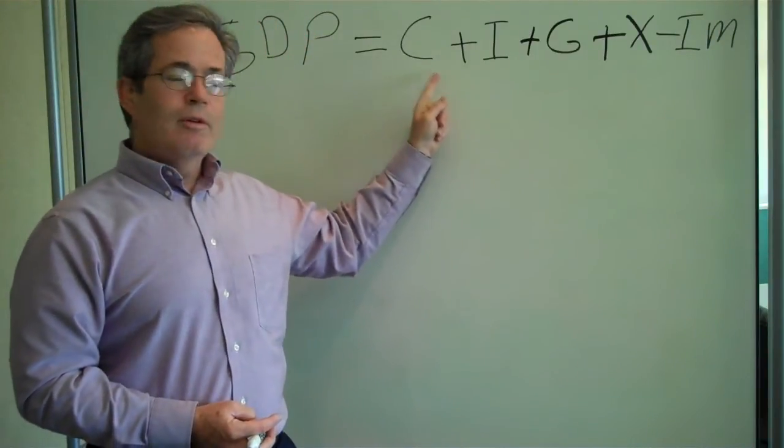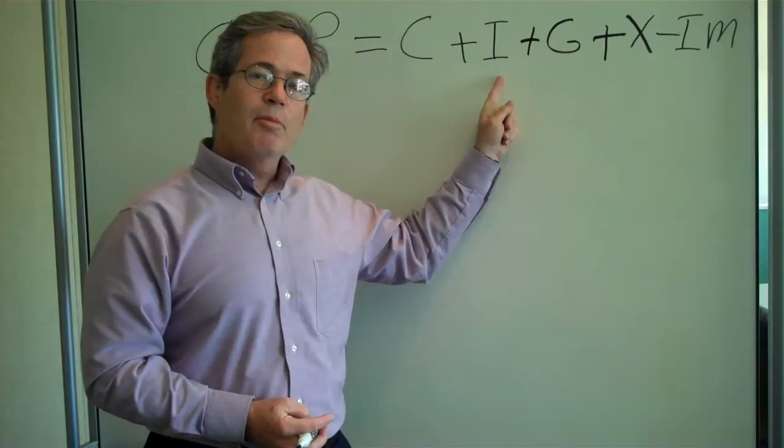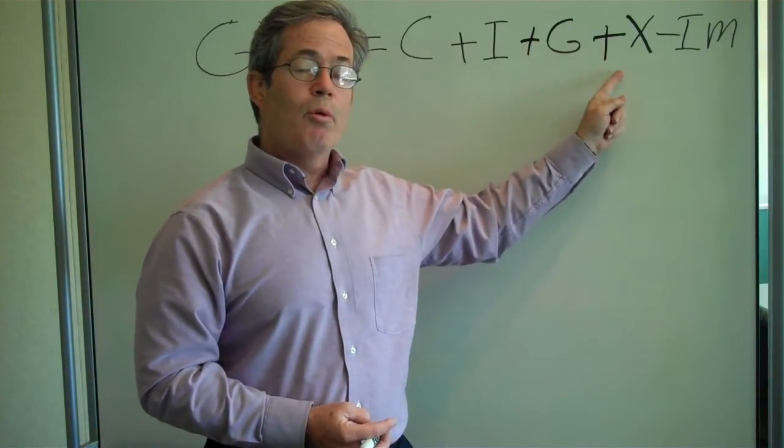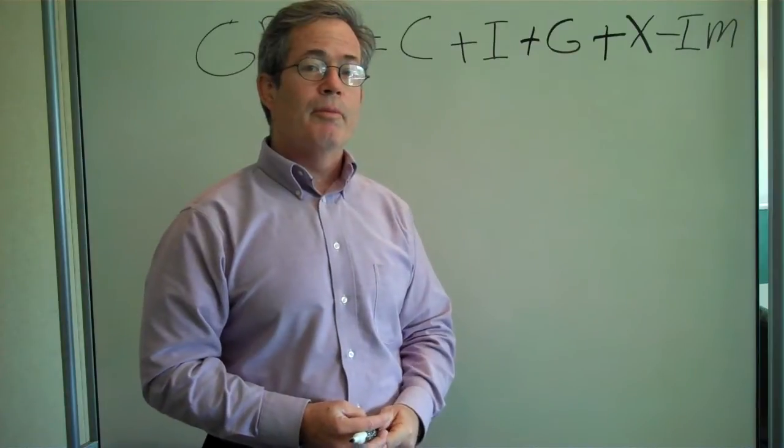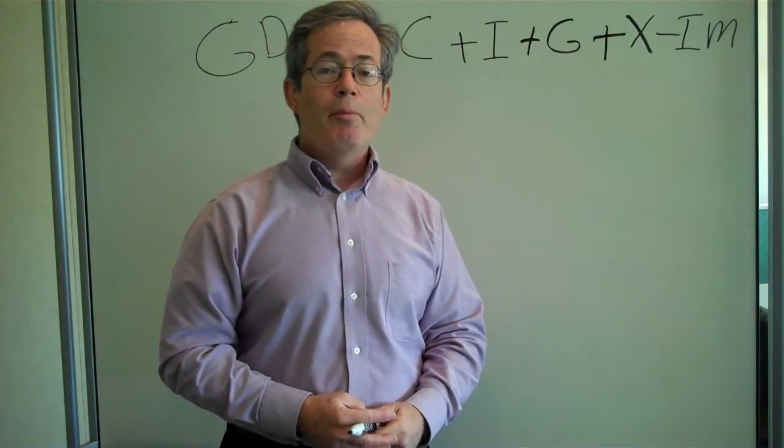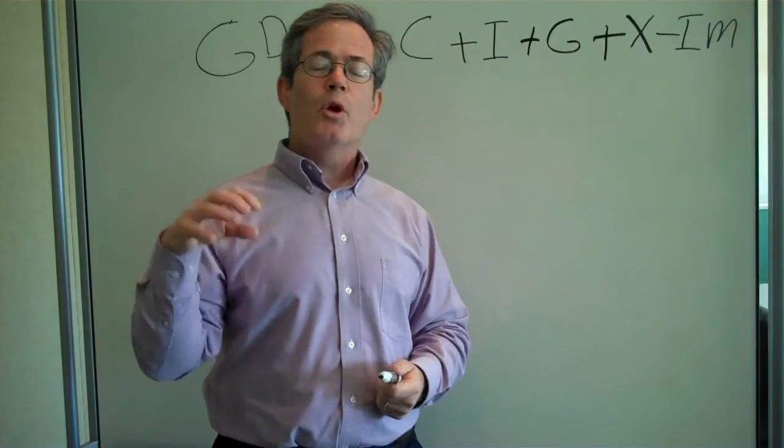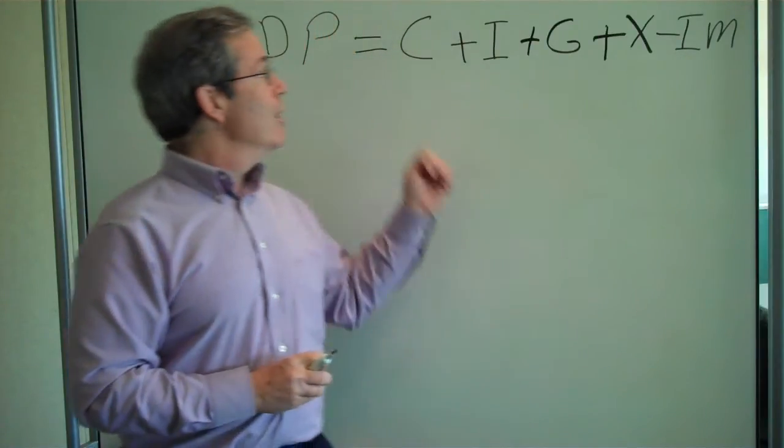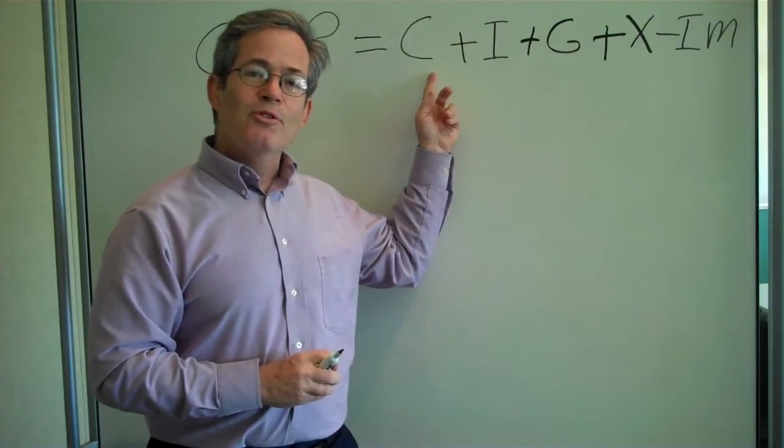GDP equals consumption expenditure, investment expenditure, government expenditure, plus exports, minus imports. Now, remember that what this shows is that we have different groups in our society who are engaging in this expenditure. Households buy consumer goods.